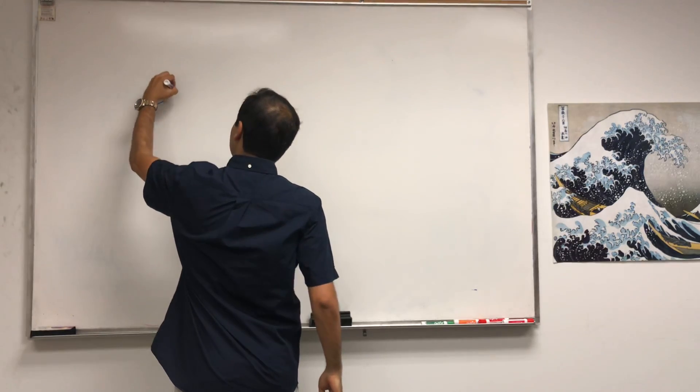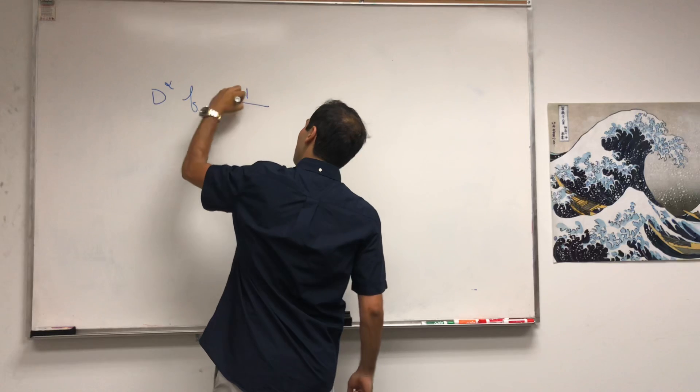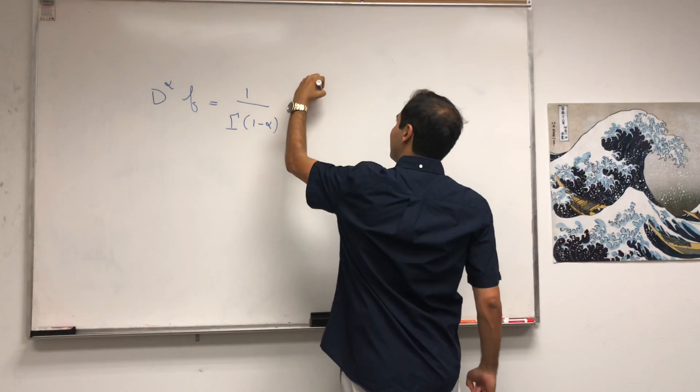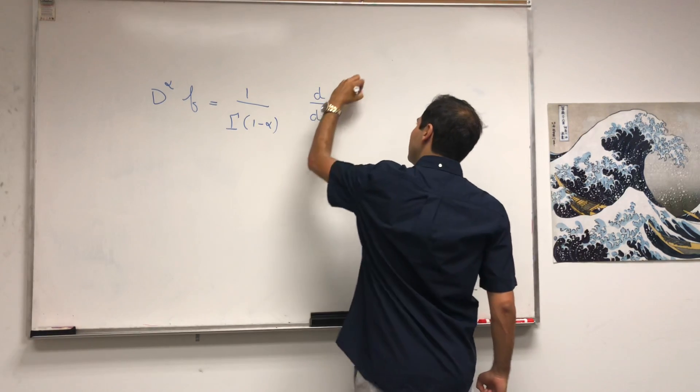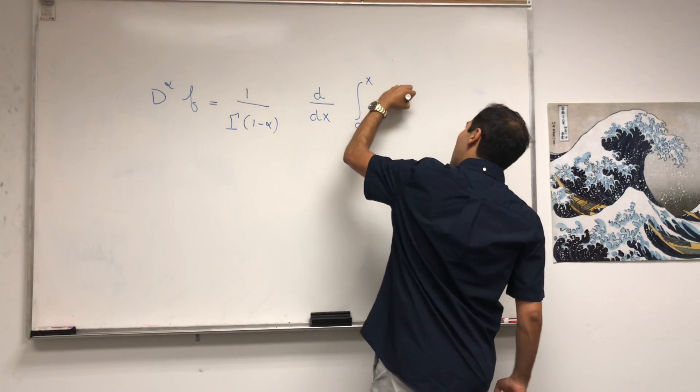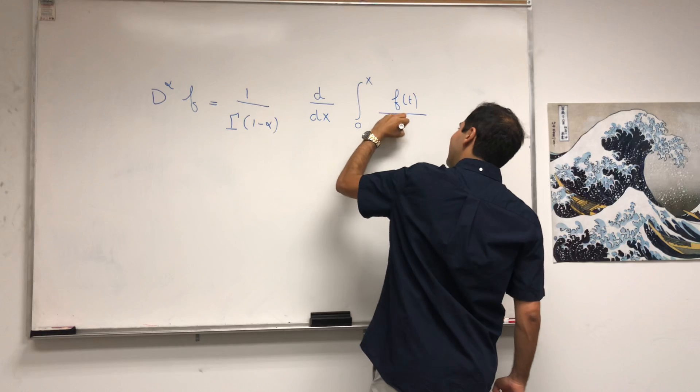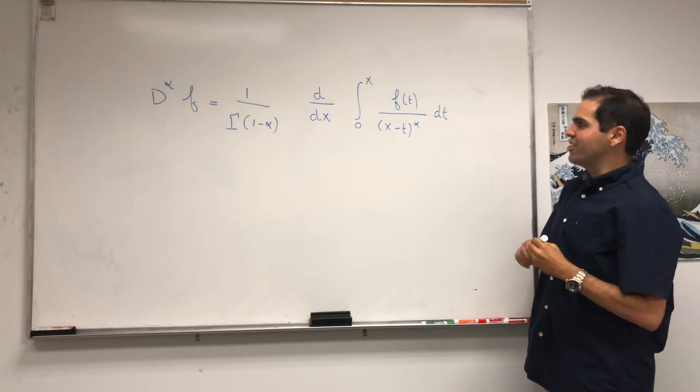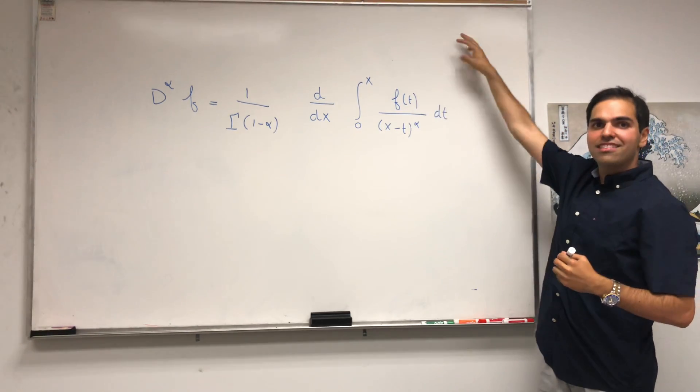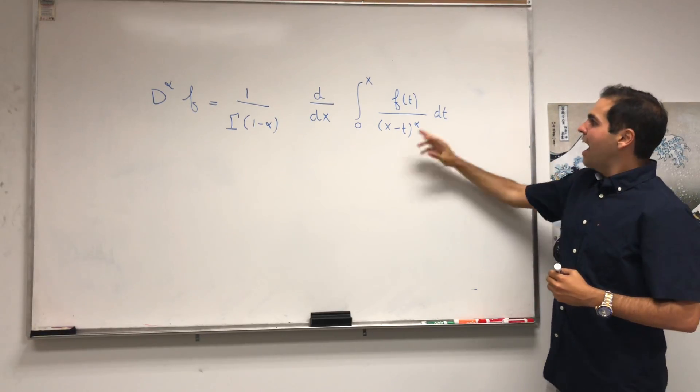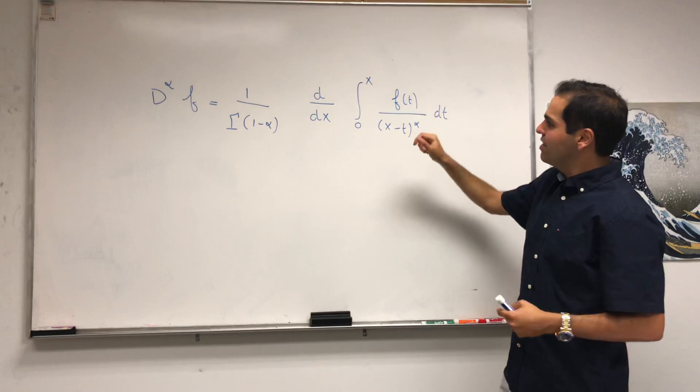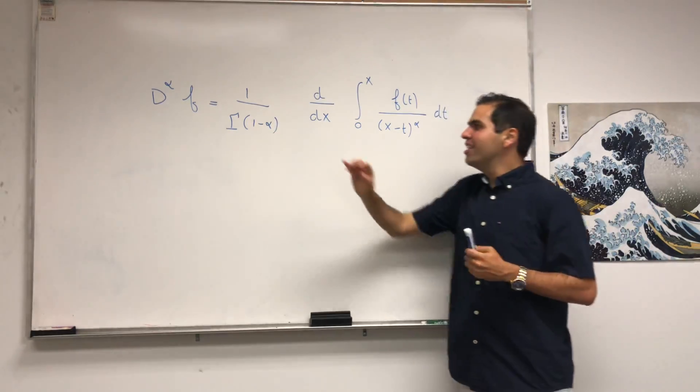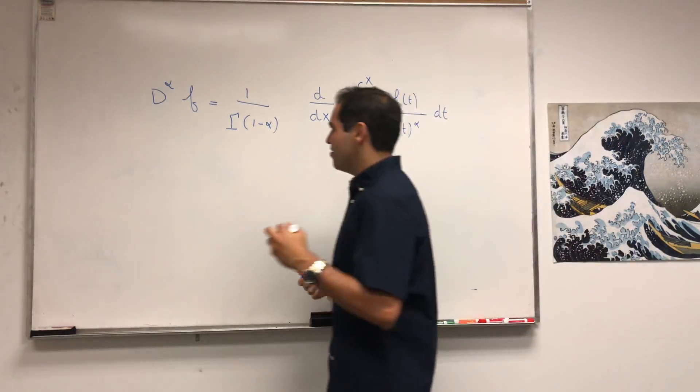The alpha derivative of f is 1 over gamma of 1 minus alpha times d/dx integral from 0 to x of f(t) times (x-t)^(-alpha) dt. So here's what you do: you take a function and you take some sort of average that makes it blow up at x, then you take the integral and differentiate that. You make this horrible average even worse and multiply by some constant.